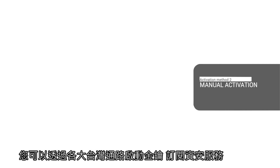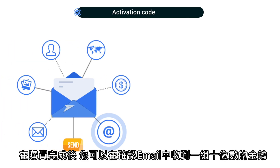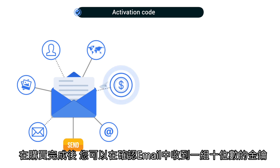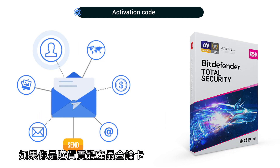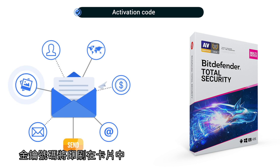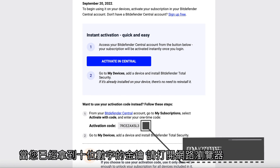Now let's move on to activation method number two: manual activation. You can also activate Bitdefender with an activation code — it's a 10-digit key. You can find it in the confirmation email received after your online order. If you bought a physical copy of Bitdefender from a retailer, the code is printed on the card inside the box. Once you have it, open up your internet browser.